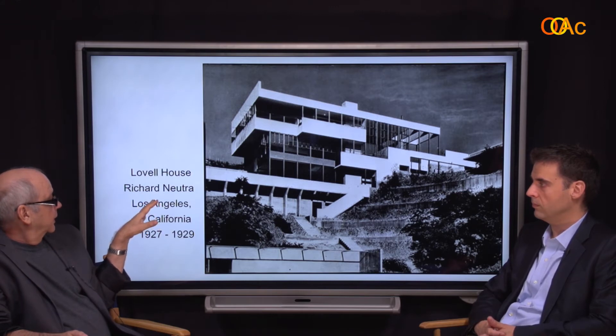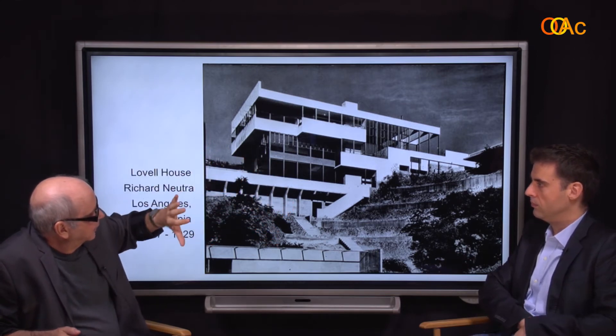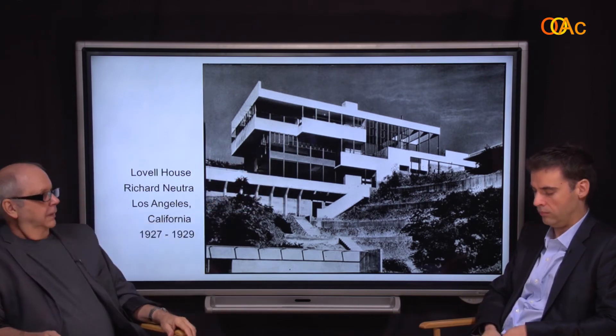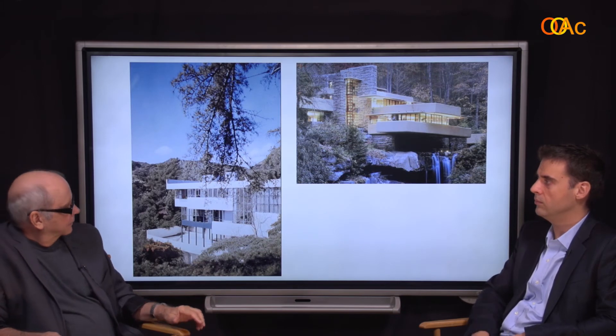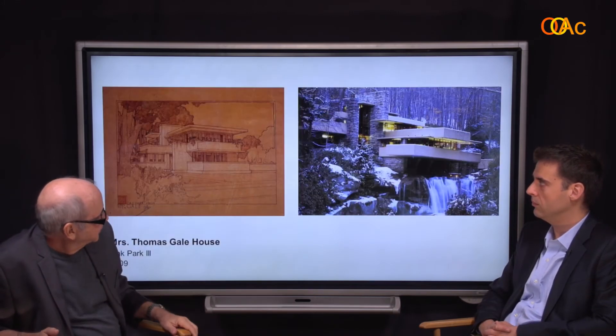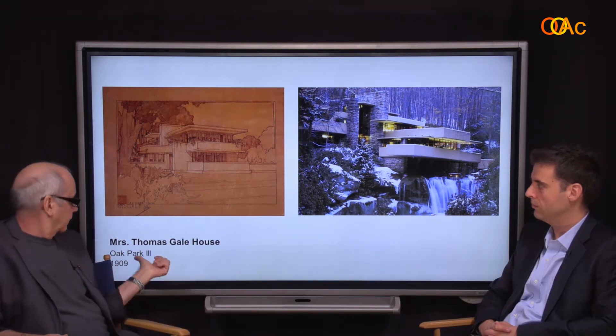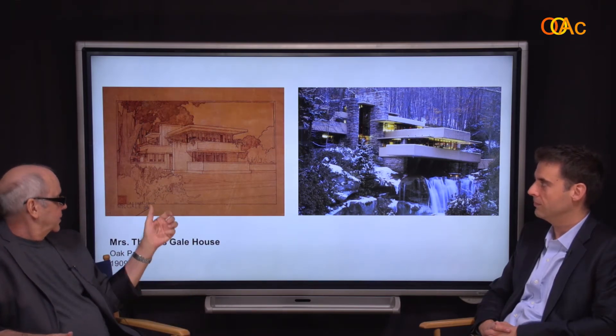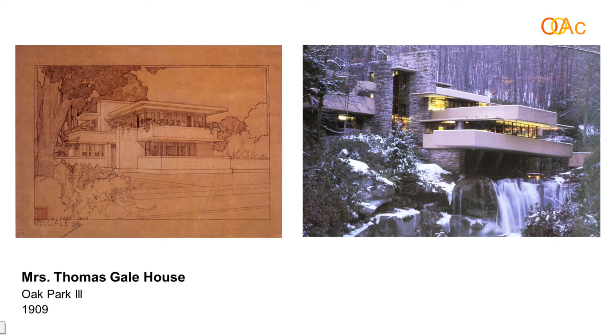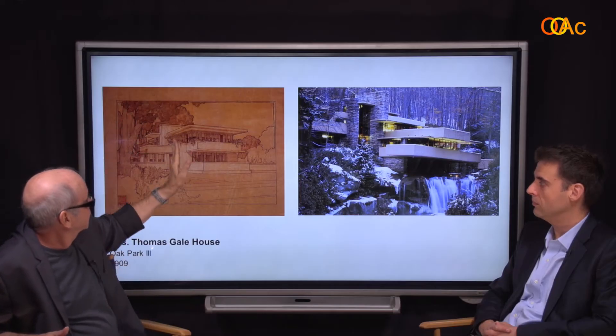Then in 1927 to 29, Richard Neutra builds the Lovell House in Pasadena, California, with these cantilevers out over the cliffs. Historians like to say, 'First Wright influenced the Europeans and then they influenced him.' Wright's response was to point to these cantilevers and say, 'How come I had already done it in 1909?' That's the Thomas Gale House, which if you go element by element — the lower deck, the upper deck, the roof, the anchoring feature, cantilevering to the left — it's exactly the same as Fallingwater.